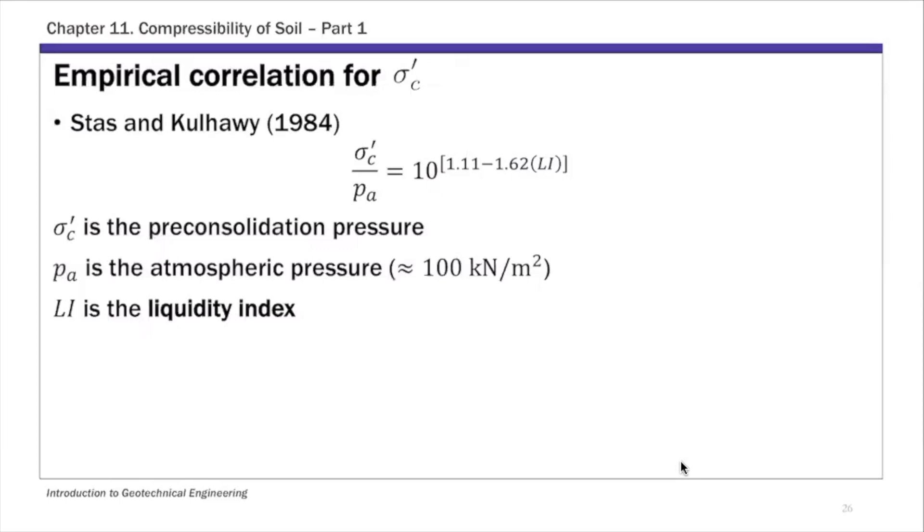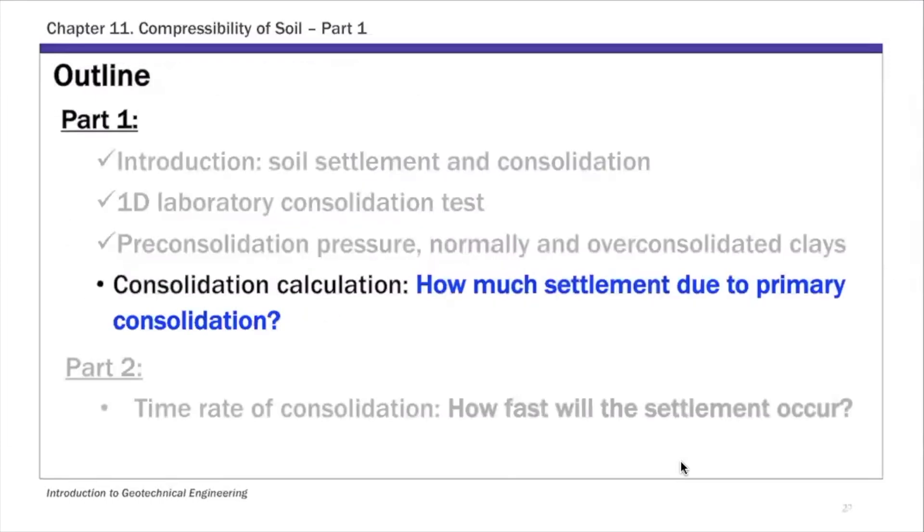And then for the preconsolidation pressure sigma C prime, in addition to that lab procedure, so again you can get CC, CS, and sigma C prime from lab, or you can use empirical correlations. This one here is a commonly used empirical correlation, where LI is liquidity index. So that's just empirical correlations. That actually covers the preconsolidation pressure, NC and OC clays.